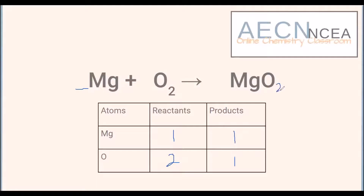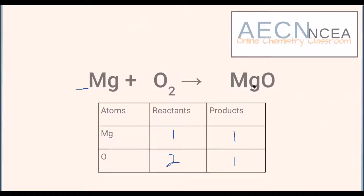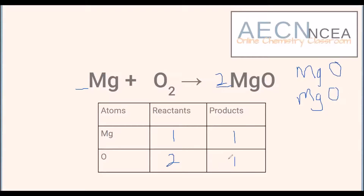Our magnesiums are balanced but our oxygens are not. We can't just put a little two as a subscript here — we're not writing ionic formula. If we did that, what we'd be saying is that for every one magnesium there are two oxygens, and that's just not the case. We still have only one magnesium for every one oxide. So if we want to balance the magnesium oxide we have to put the number in front of the entire ionic compound.